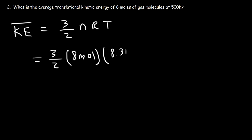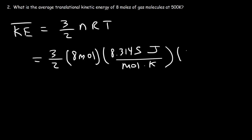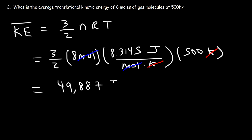R is 8.3145, and the units are joules per mole per Kelvin. The temperature is 500 Kelvin. Always pay attention to the units — the unit kelvin will cancel and the unit moles will cancel, so we get the average kinetic energy in joules. It's going to be 3 times 8 times 8.3145 times 500 divided by 2, which gives us 49,887 joules.